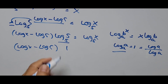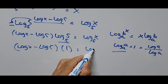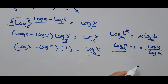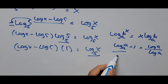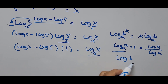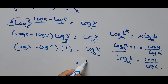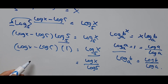Now we set up the equation using the change of base formula — one of the key rules of logarithms. Log of B to base A equals log of B divided by log of A. We'll apply this to the right side of the equation. The right side now becomes log of X divided by log of 5, and the left side remains log of X minus log of 5.